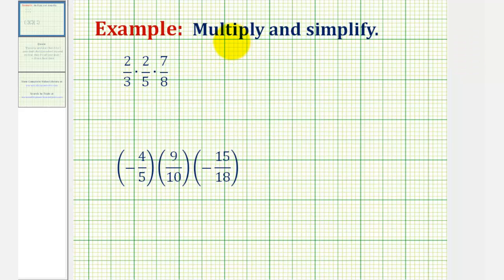Welcome to two examples of determining the product of three fractions. Multiplying three fractions is almost the same as multiplying two fractions, except when multiplying the numerators and denominators, we'll have three products instead of two. But before we multiply, it's recommended that we simplify first, meaning we identify any common factors between the numerators and denominators that would simplify to one.